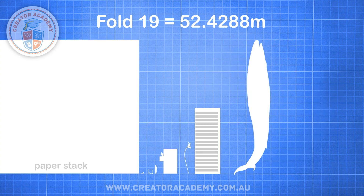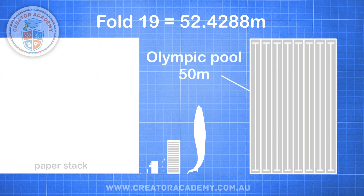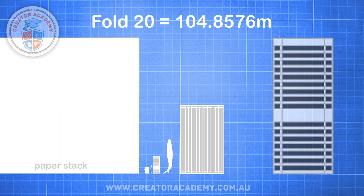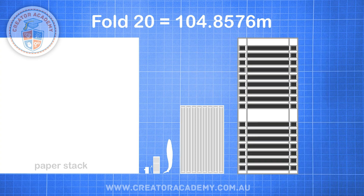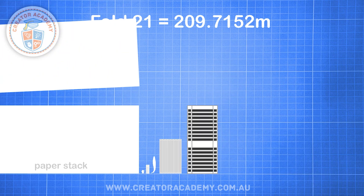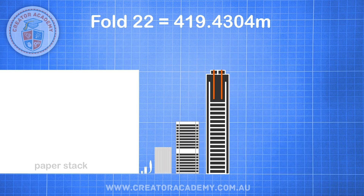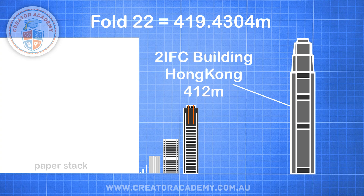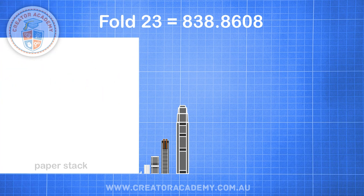Fold 19 brings your stack to 52 metres, which is taller than an Olympic swimming pool is long. 20 folds brings your stack to 104 metres tall, which is the height of the HSBC Centre in Brisbane, Australia. 21 folds doubles that to 209 metres tall, about the height of the Aurora Tower. 22 folds makes your paper stack double that to the size of the International Finance Centre in Hong Kong. And finally, on the 23rd fold, your paper stack reaches 838 metres — just slightly taller than the world's tallest building.